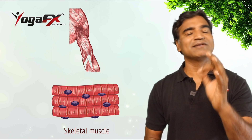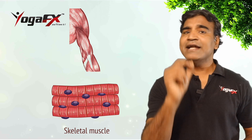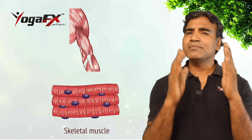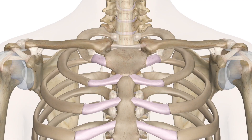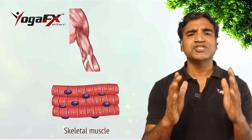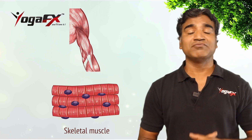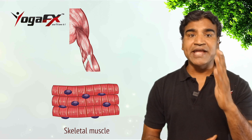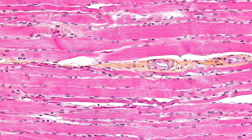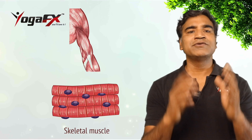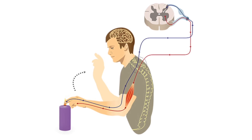The first one is the skeletal muscle. Skeletal muscles, commonly called muscles, are organs of the muscular system that are mostly attached by tendons to bones of the skeleton. The muscle cells of skeletal muscles are much longer than in other types of muscle tissue and are often known as muscle fibers. The muscle tissue of a skeletal muscle is striated, having a striped appearance due to the arrangement of sarcomeres. Skeletal muscles are voluntary muscles under the control of the somatic nervous system.